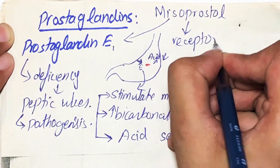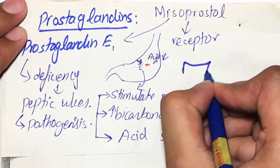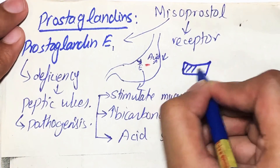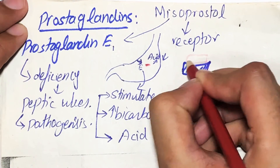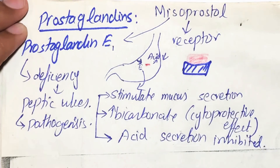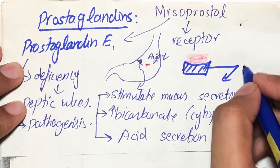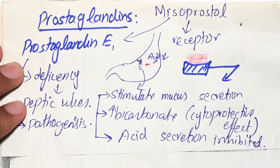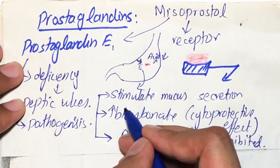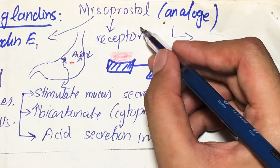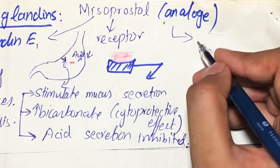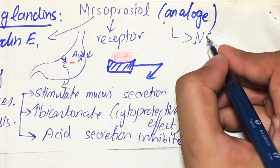When there is binding of misoprostol over the prostaglandin receptor, there will be initiation of these factors: stimulation of mucus secretion, increase in bicarbonates, and decrease or inhibition of acid secretion. This agent, misoprostol, is approved for prevention of NSAID-induced gastric ulcers.